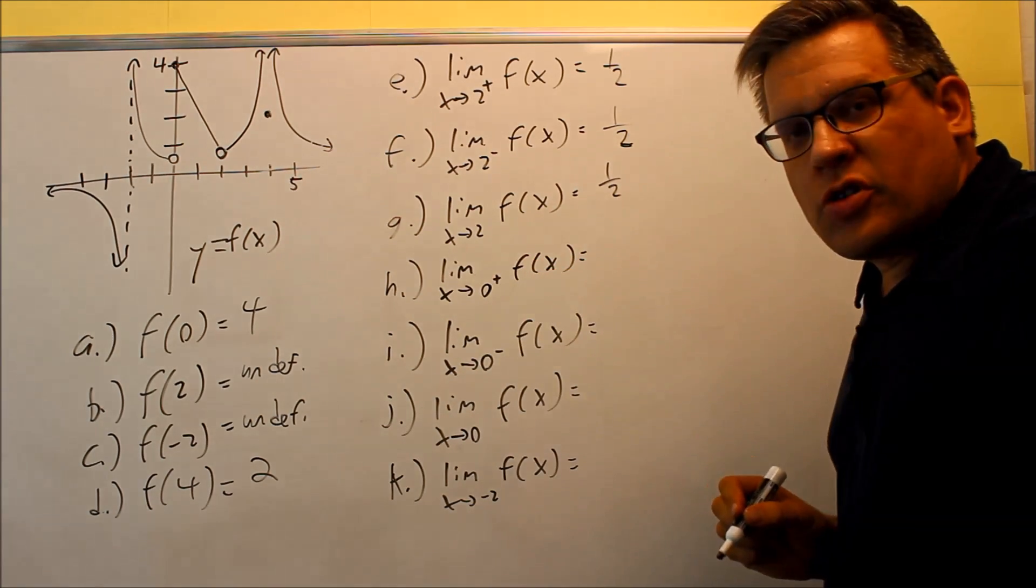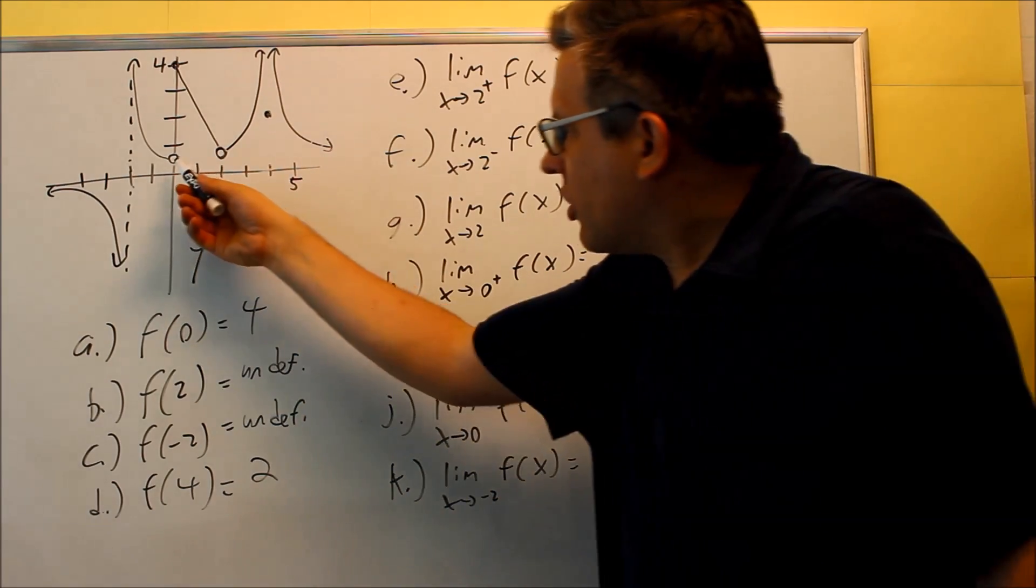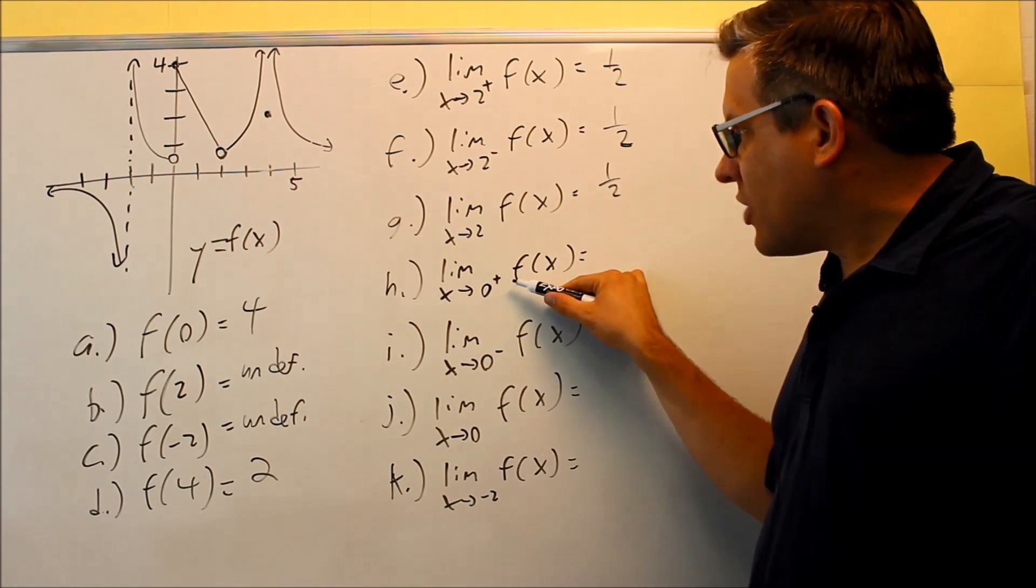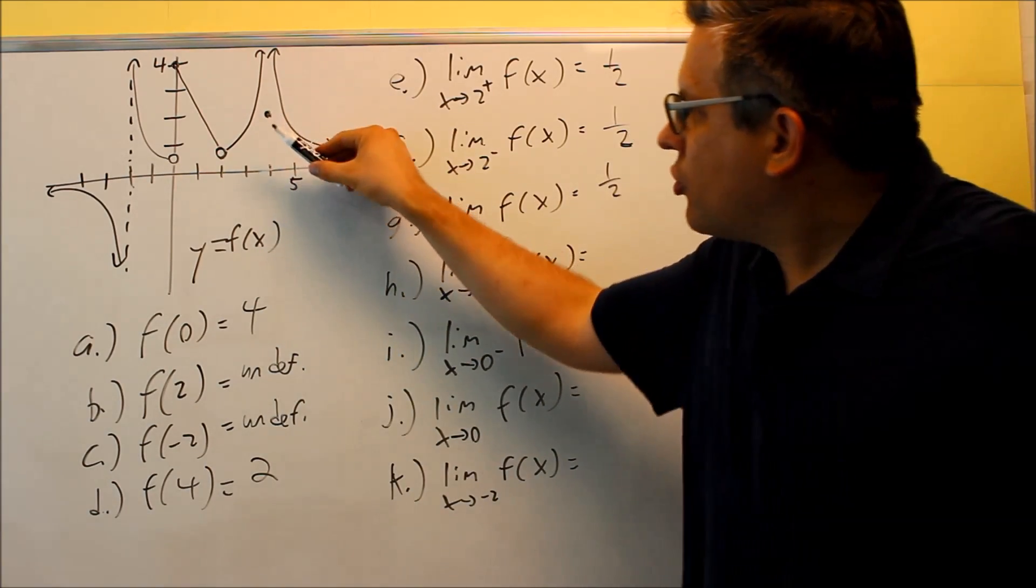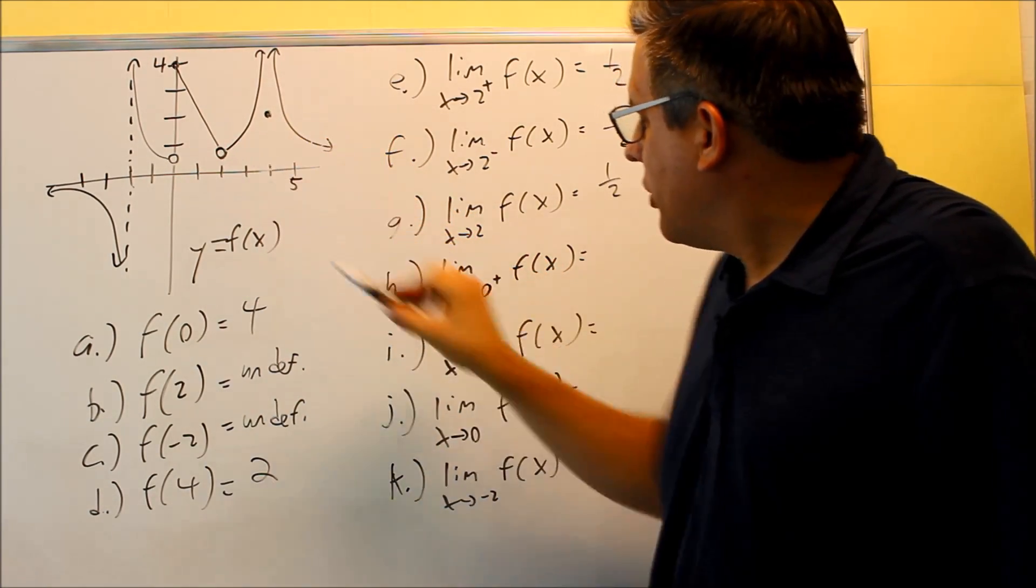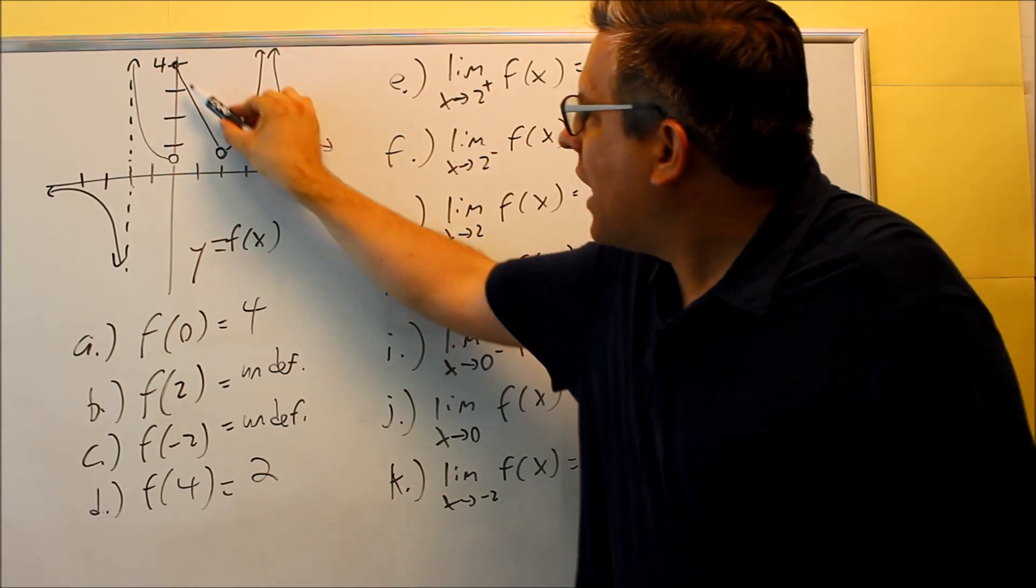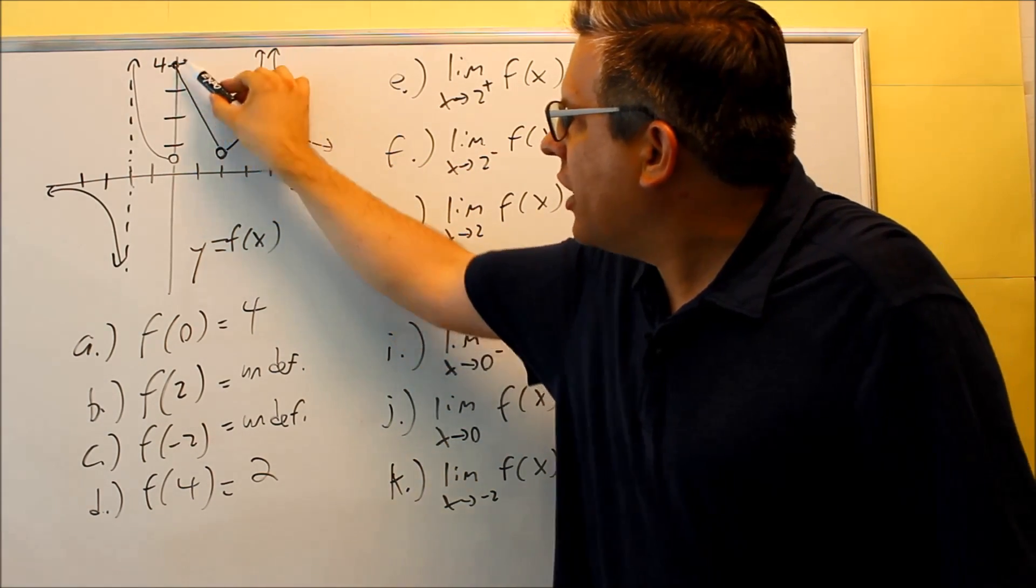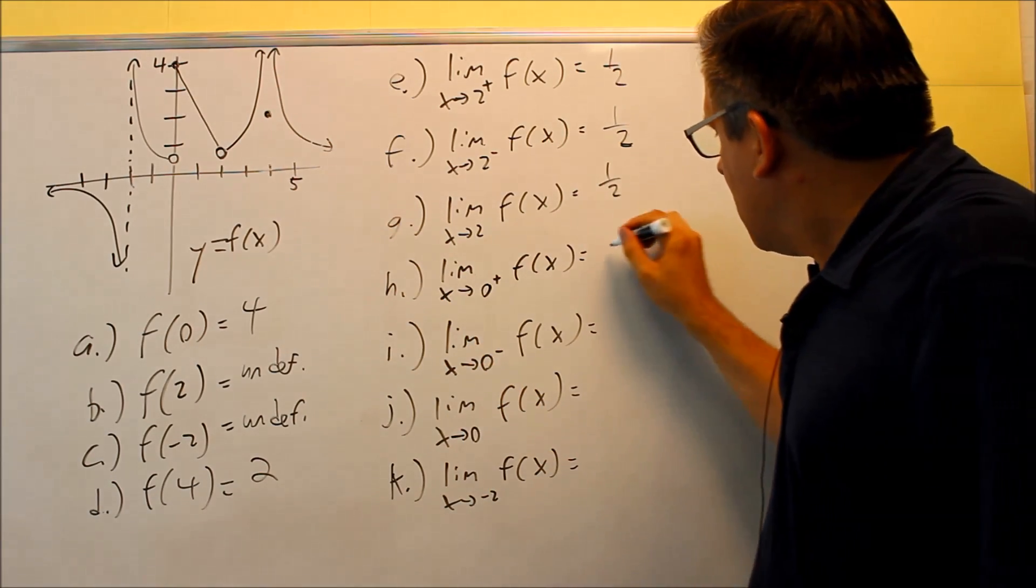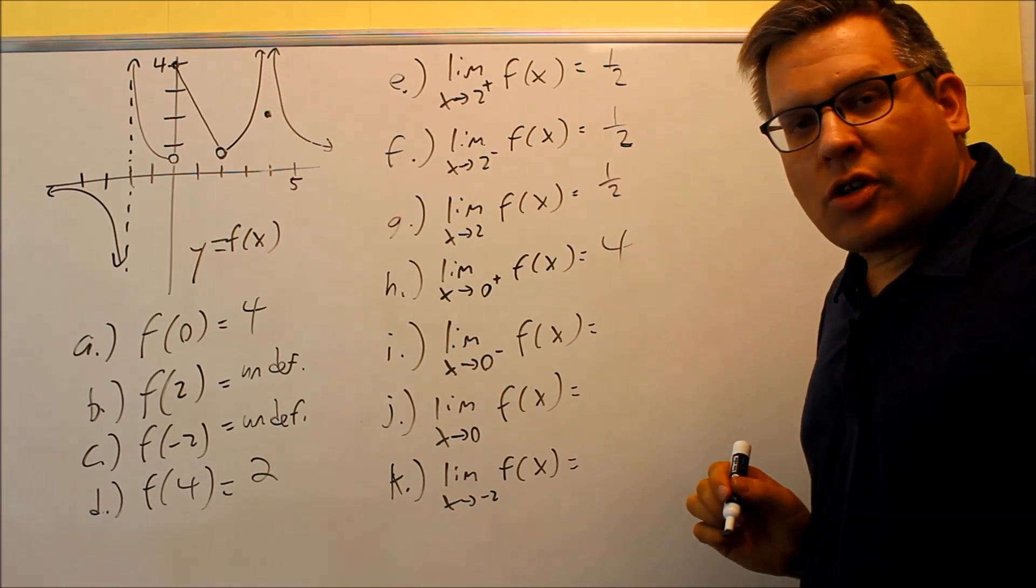Limit as you approach zero from the positive side. You're approaching zero from the positive side - that means you're on this piece of the graph. You're going to follow it up this way, going up, and it's going to go to four. This answer is going to be four.